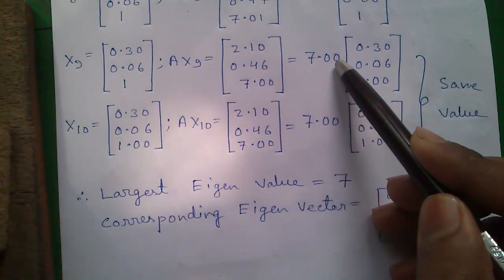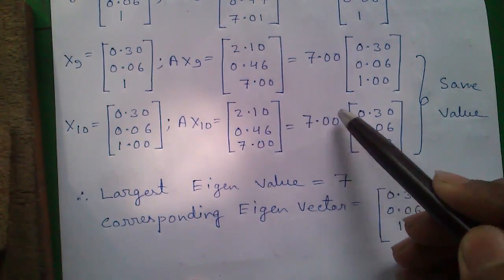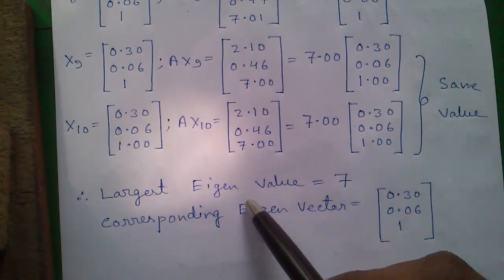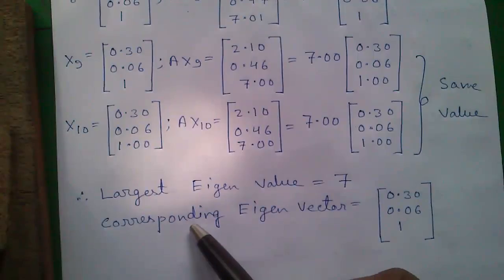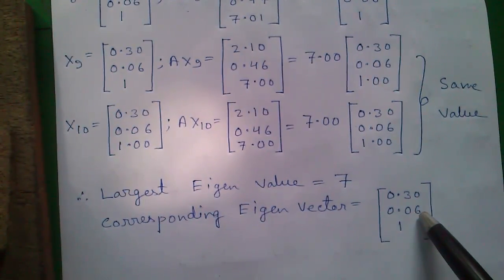In iteration 9 and iteration 10, we got exactly the same value, 7.00, as eigenvalue and the same value for eigenvector also. So we can say our largest eigenvalue is 7 and corresponding eigenvector is 0.30, 0.06, and 1.